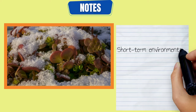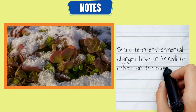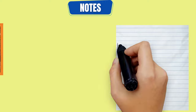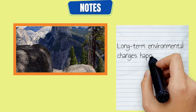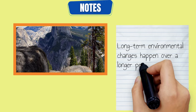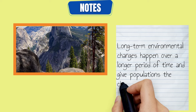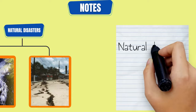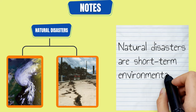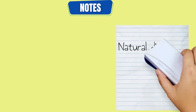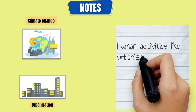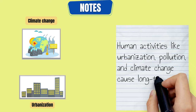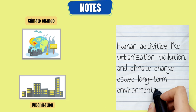Short-term environmental changes have an immediate effect on the ecosystem and can cause populations to become extinct. Long-term environmental changes happen over a longer period of time and give populations a chance to adapt or relocate to survive. Natural disasters are short-term environmental changes. Human activities like urbanization, pollution, and climate change cause long-term environmental changes.